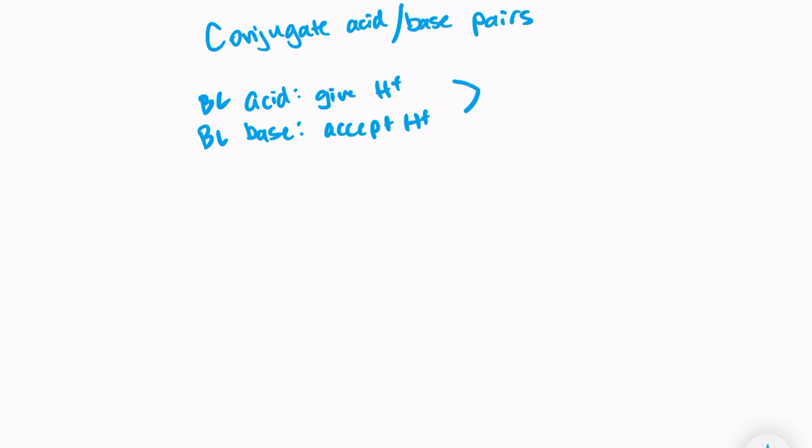So acids and bases always react in pairs. They react together in pairs. An acid wouldn't be able to react if there was nothing to give away its hydrogen to. A base wouldn't react if there was nothing to take a hydrogen from. So they always happen together. An acid has to have something to give its hydrogen to, and the base has to have someone to take a hydrogen from.